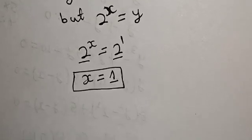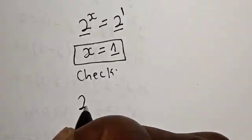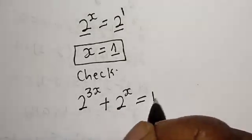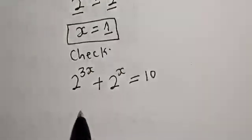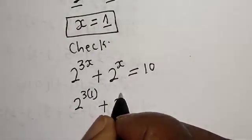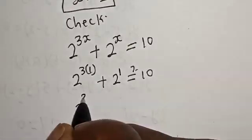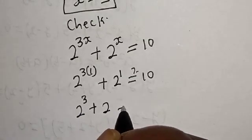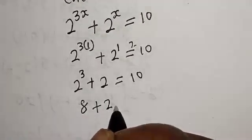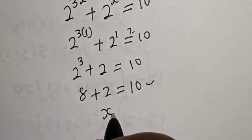We can check to confirm if our answer is right. We have the given equation: 2 raised to power 3s plus 2 raised to power s must equal 10. When s is 1, we have 2 raised to power 3 times 1, plus 2 raised to power 1, which is 2 raised to power 3 plus 2, equals 8 plus 2, equals 10. We satisfy the given equation at s equal to 1.